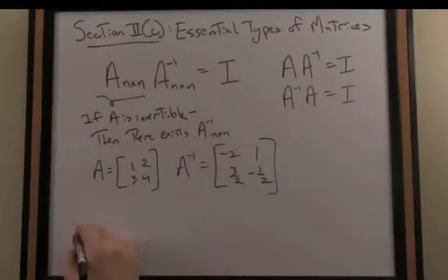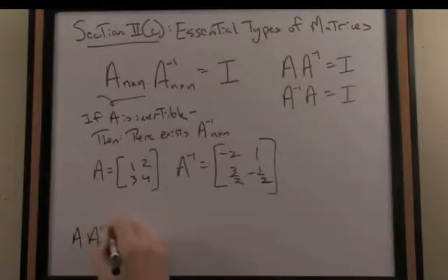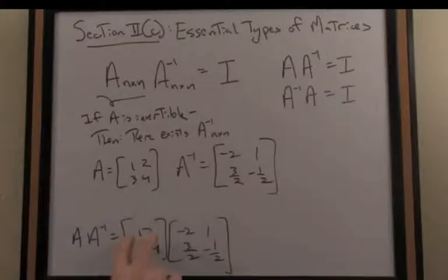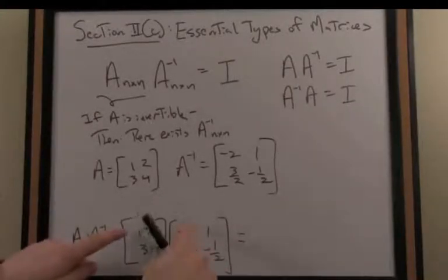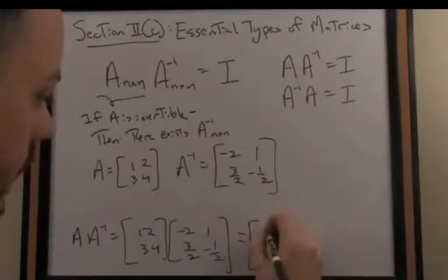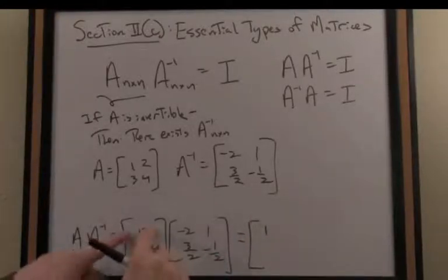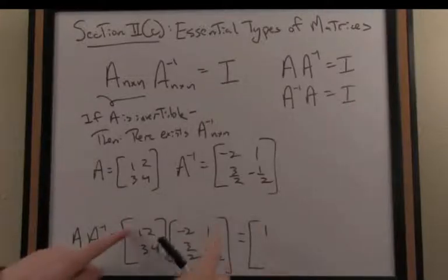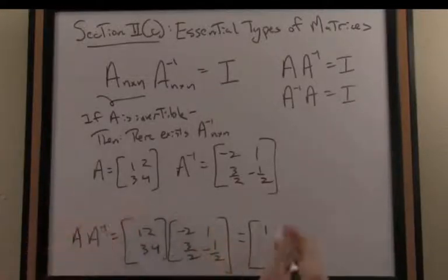If I multiply A times A inverse, we should end up with the identity. We just do a little bit of arithmetic here. We have negative 2 plus 3, so that's going to result in 1 when I take the dot product. Now I take row 1 dotted with column 2 in the right matrix, and I have 1 times 1 is 1, minus 1 is 0.